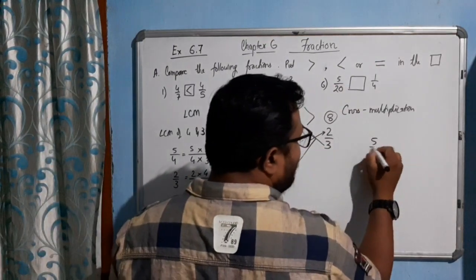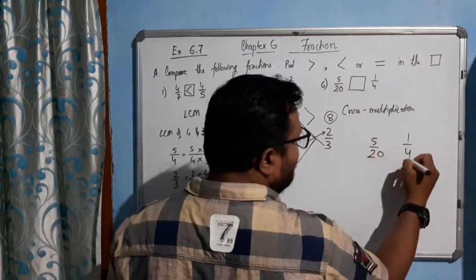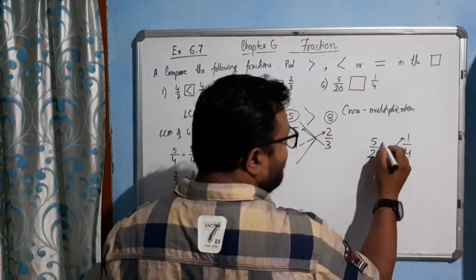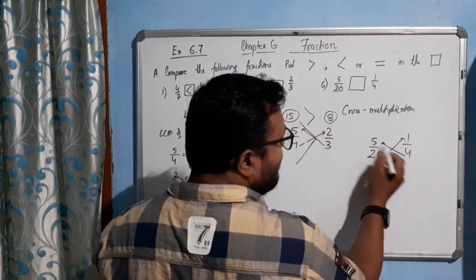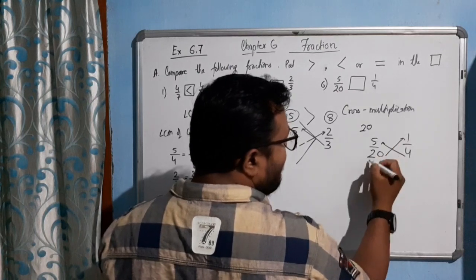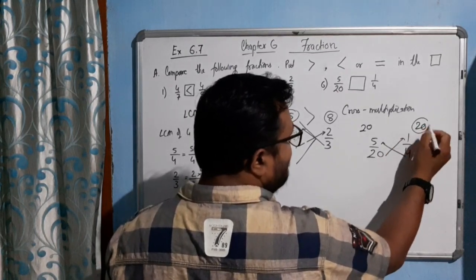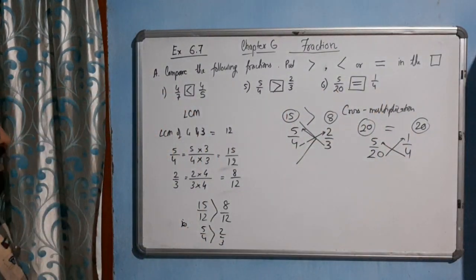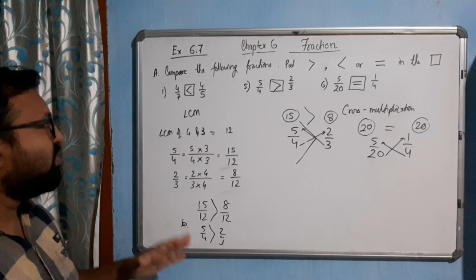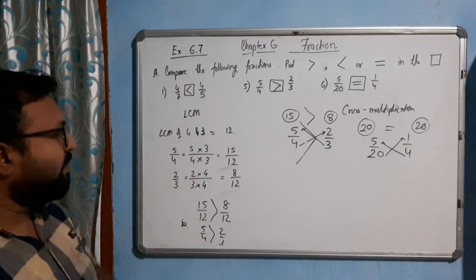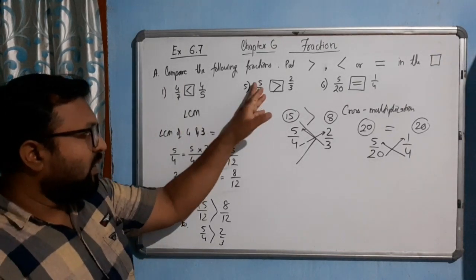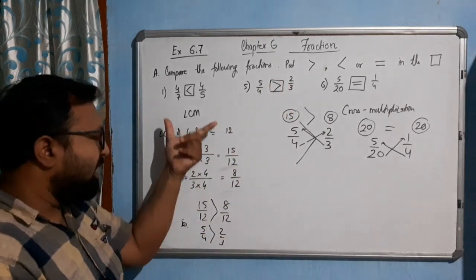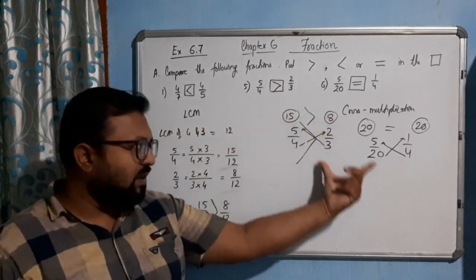Here is another example: 5/20 and 1/4. By cross multiplication, 1 × 20 = 20 and 4 × 5 = 20. Both products are equal, so we use the equal sign here. I hope you have understood all three cases: when numerators are the same, and when both numerator and denominator differ — using LCM or cross multiplication.